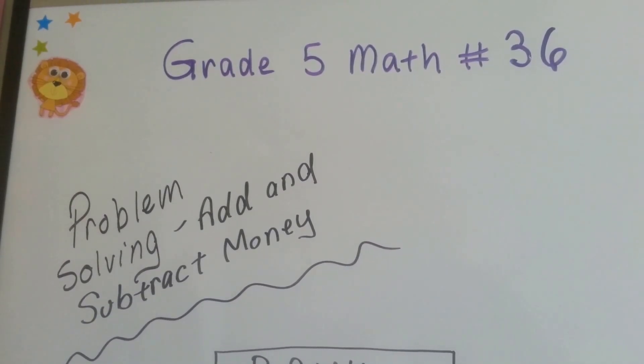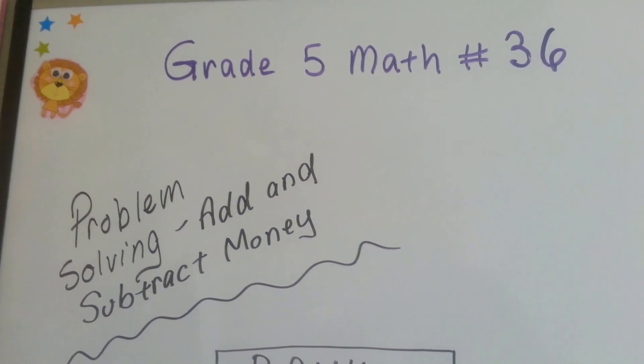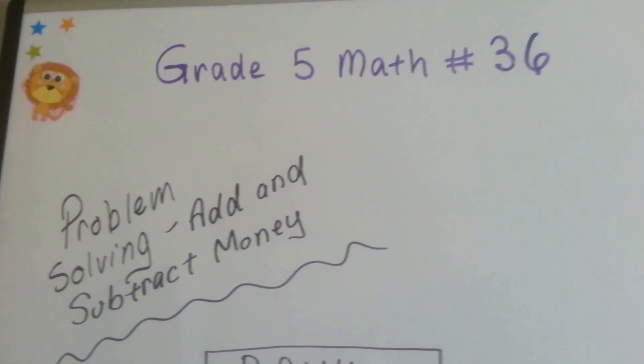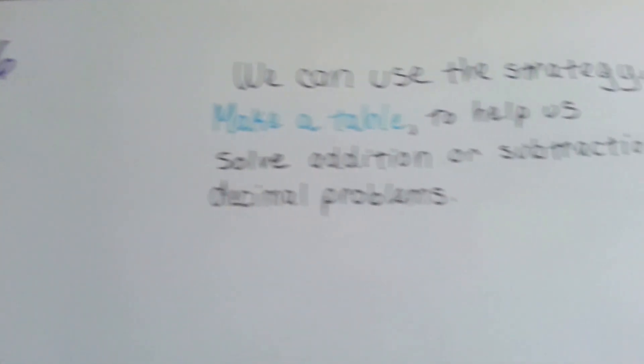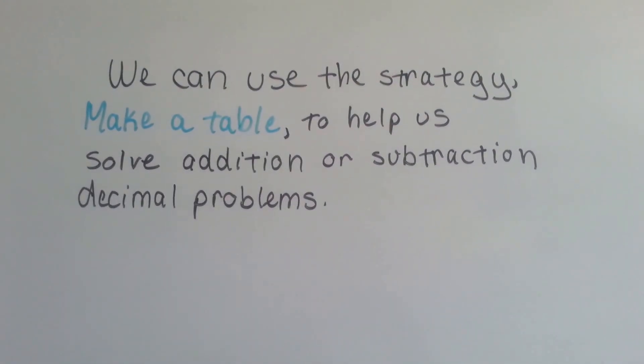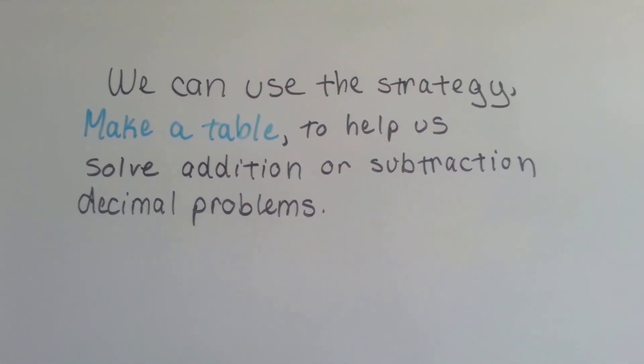Grade 5 math number 36, Problem Solving Add and Subtract Money. We can use the strategy Make a Table to help us solve addition or subtraction decimal problems.